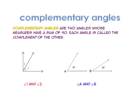Complementary angles are two angles whose measures have a sum of 90 degrees. Each angle is called the complement of the other. So angle 1 plus angle 2 equals 90, and angle A plus angle B is also 90.